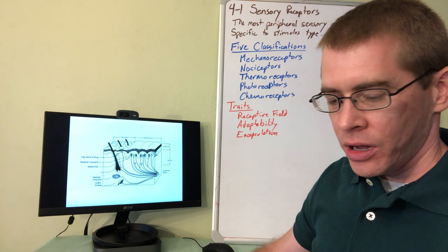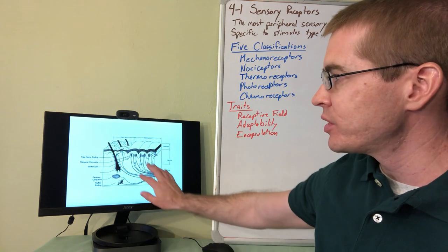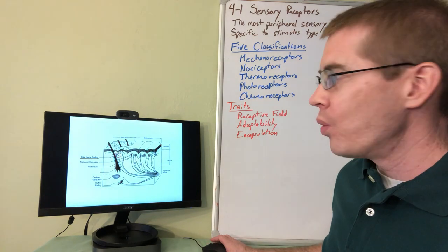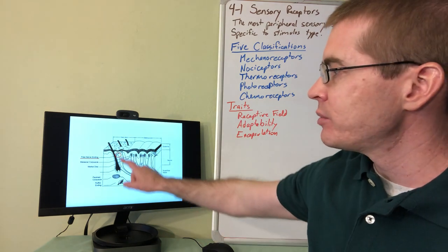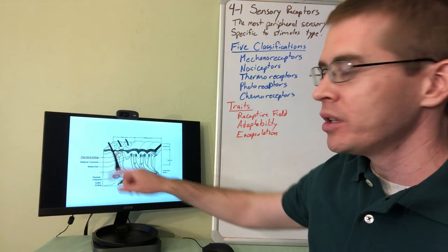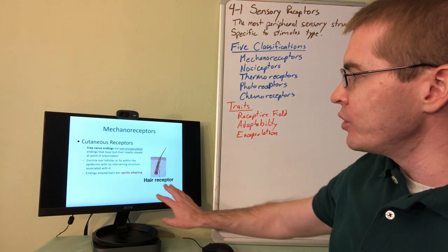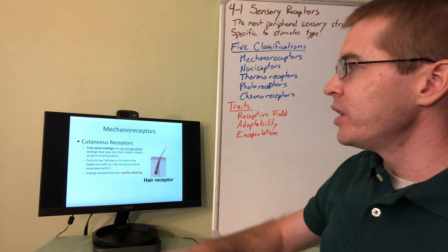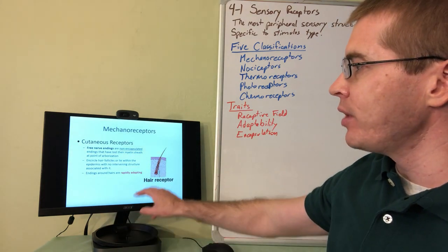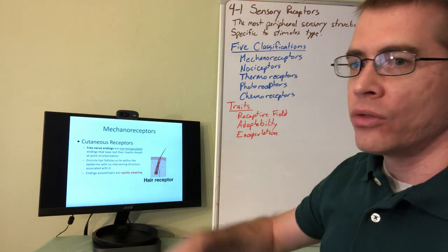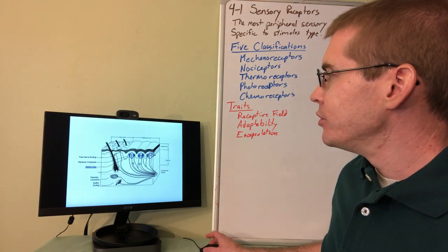Here is a drawing of different sensory receptors in the skin. First, free nerve endings can be found around hair follicles and within the dermis and epidermis. As the name implies, they are non-encapsulated. These are rapidly adapting.